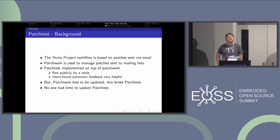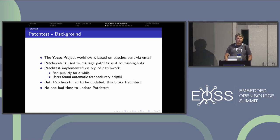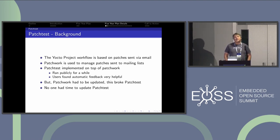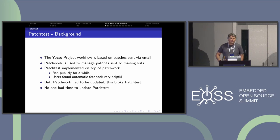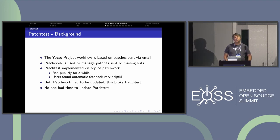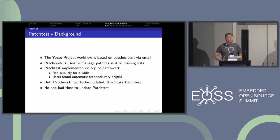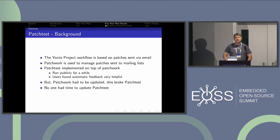Some of you may remember PatchTest — it was running for a while where you would email a patch. Patchwork manages the patches coming in so we don't lose track of them. PatchTest was implemented on top of Patchwork and would run some basic tests against a patch and then email a reply to the listserv. Unfortunately, we chose the wrong branch of Patchwork, eventually had to change branches, and that broke PatchTest. By then the PatchTest maintainer had moved on, so there was no more PatchTest, which was very unfortunate.